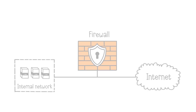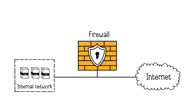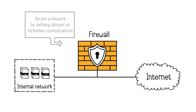A firewall is a network component, whether in software, hardware, or a combination of both, with the function of securing a network by defining allowed or forbidden communications. Firewalls filter, analyze, and decide to allow or reject communications based on defined security rules.